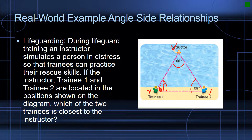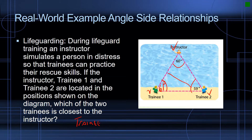Now, which one is the shortest distance? It's easy to get tripped up thinking about the angle rather than the side. If the shortest side is opposite the shortest angle, then the shortest side is right there between trainee one and the instructor. So which of the two trainees is closest to the instructor? Trainee one.